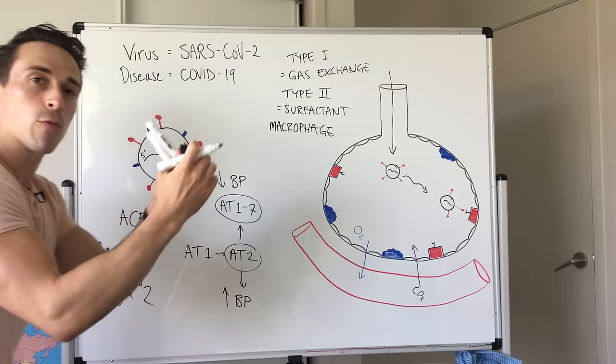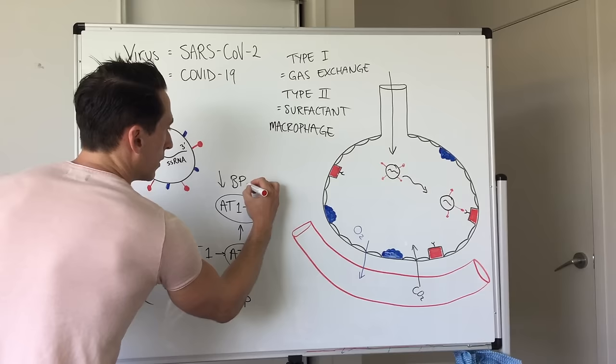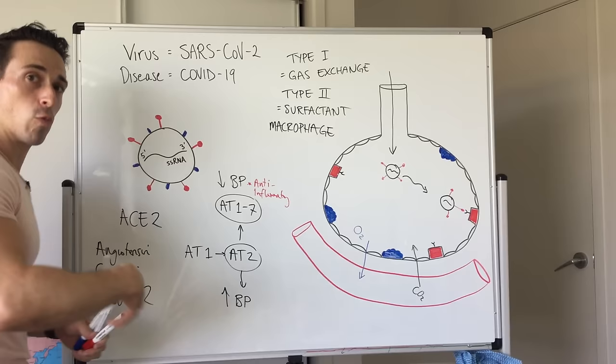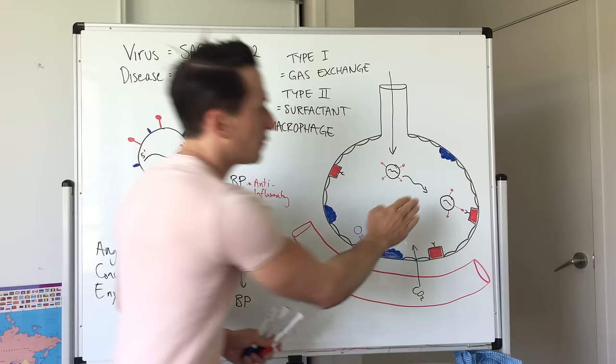But what it also is, is it's anti-inflammatory. So ACE2 is present to help reduce blood pressure and it has anti-inflammatory properties. This is going to be important. When this virus lock and key, S protein into ACE2 receptor, the virus is now taken into the cell.